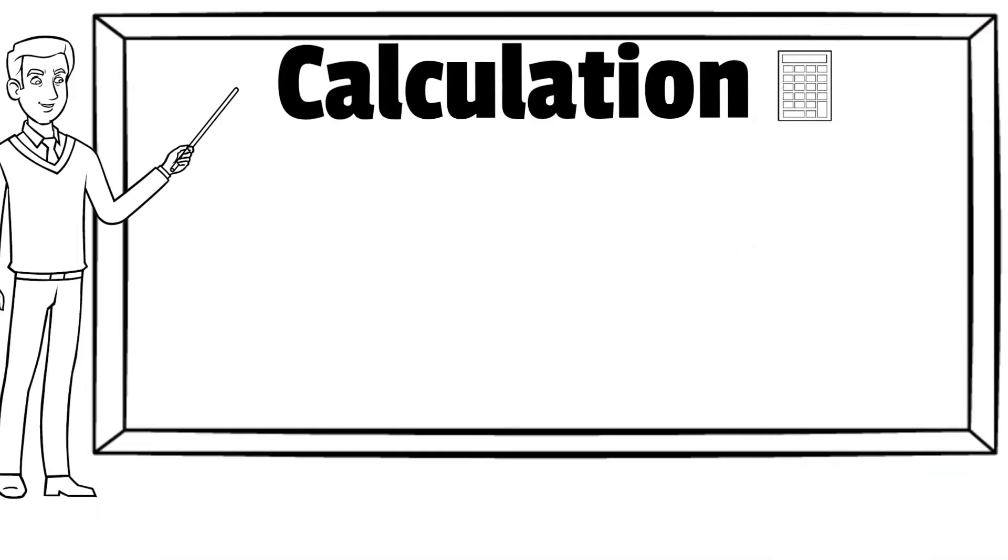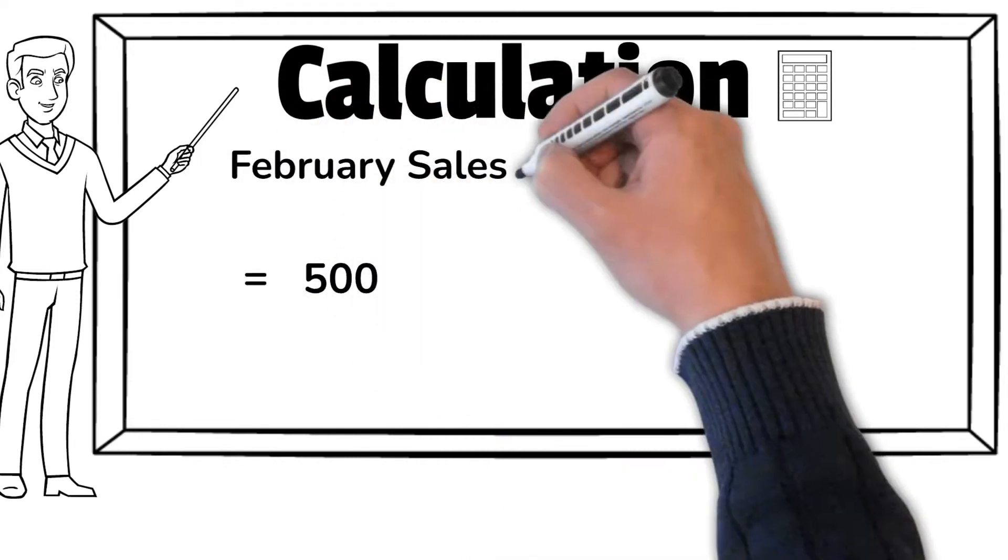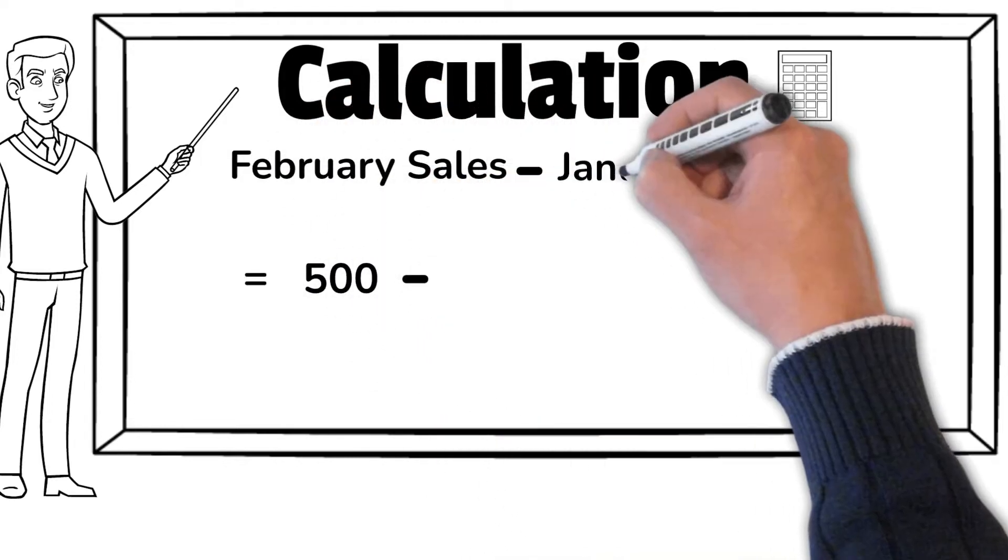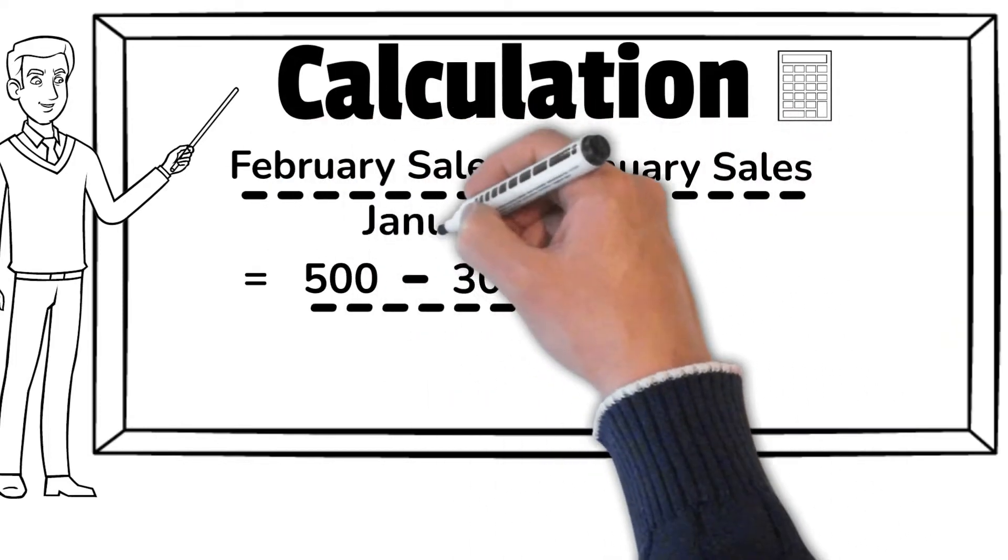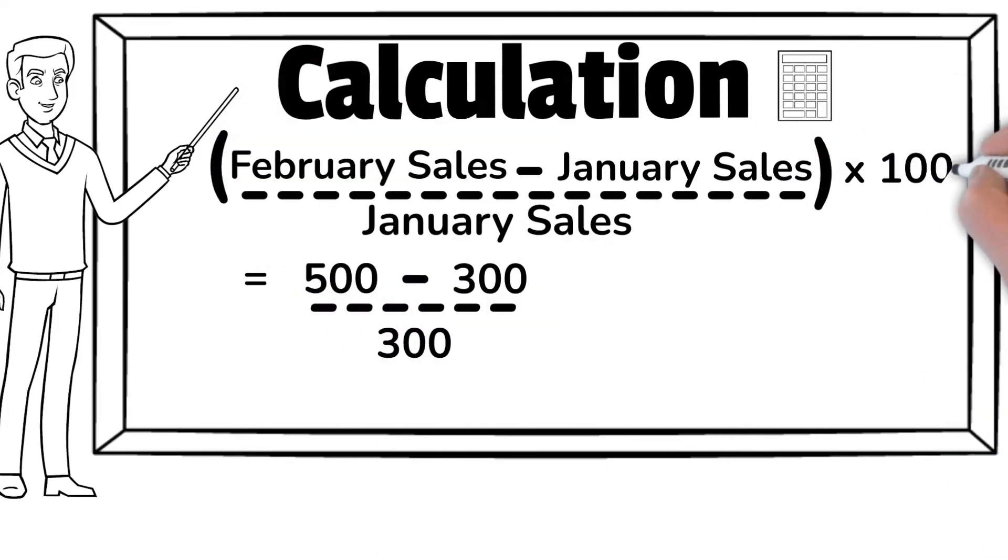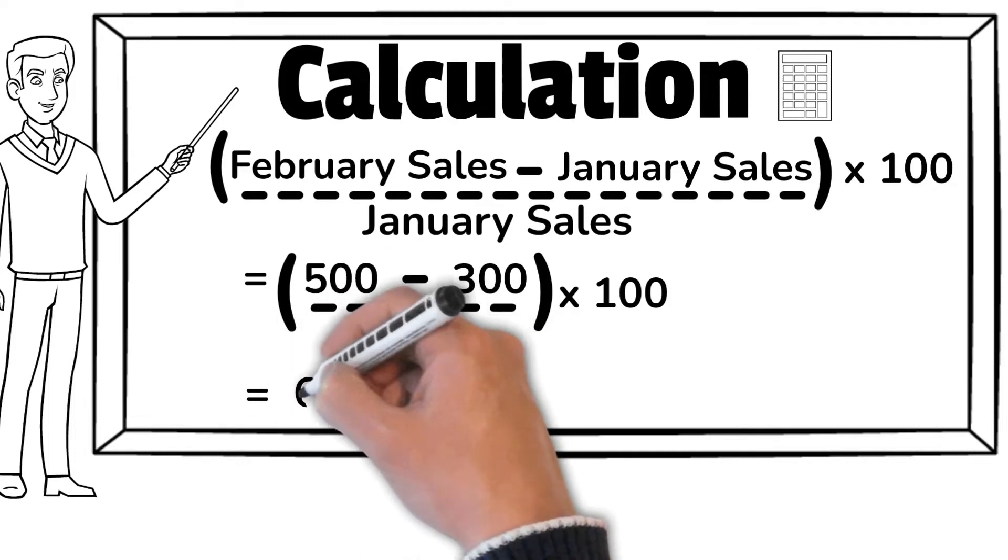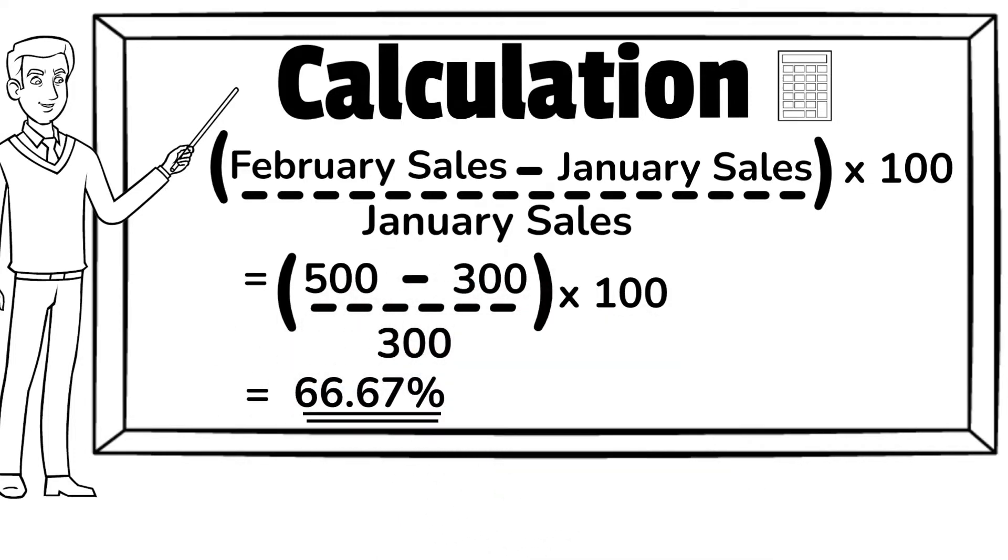The calculation goes like this: burgers sold in the month of February, that is 500, less burgers sold in the month of January, that is 300, divided by burgers sold in the month of January, that is 300, and multiply the whole expression by 100. The month-over-month growth in John's business has been 66.67%. Not a bad number.